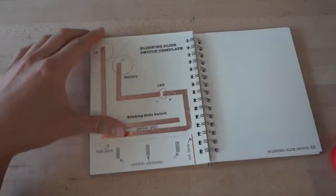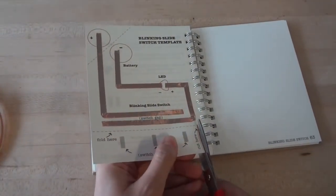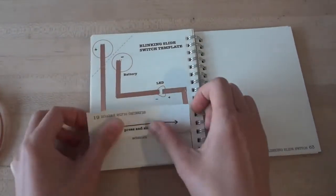Next, cut along the red line on your template. Then, fold along the dotted line. This will create a flap for your switch contacts.